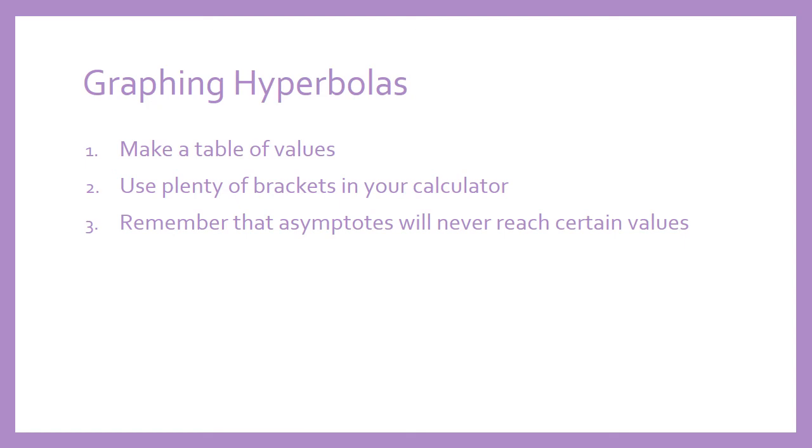And remember that if a function asymptotes at zero, it's never going to reach zero. If a function asymptotes at one, it's never going to reach one. So when we're doing our graphs, make sure that we don't intersect the asymptotes.